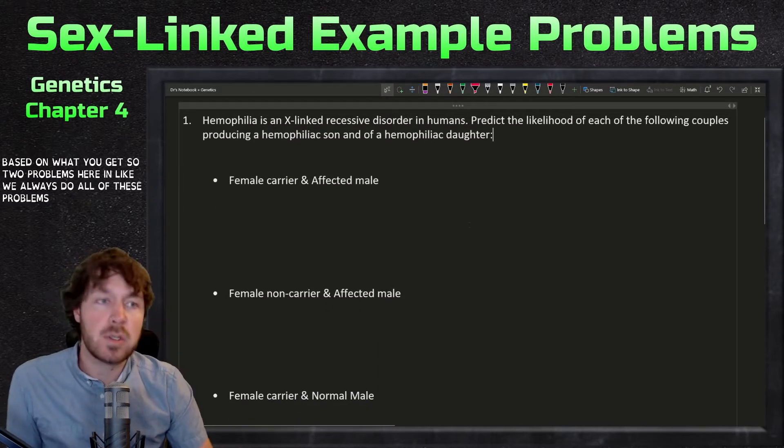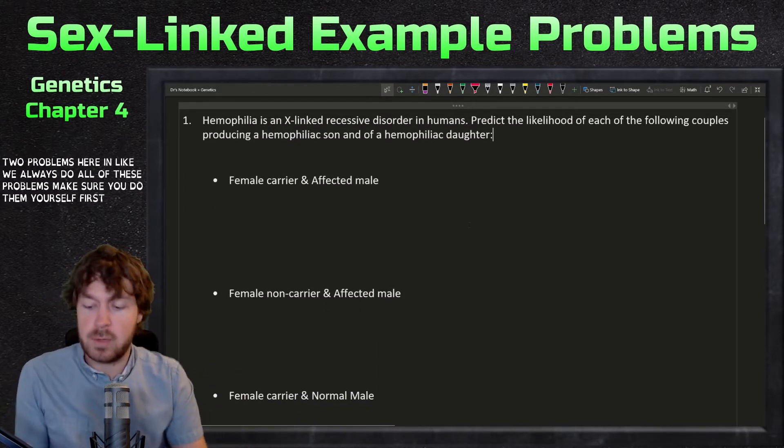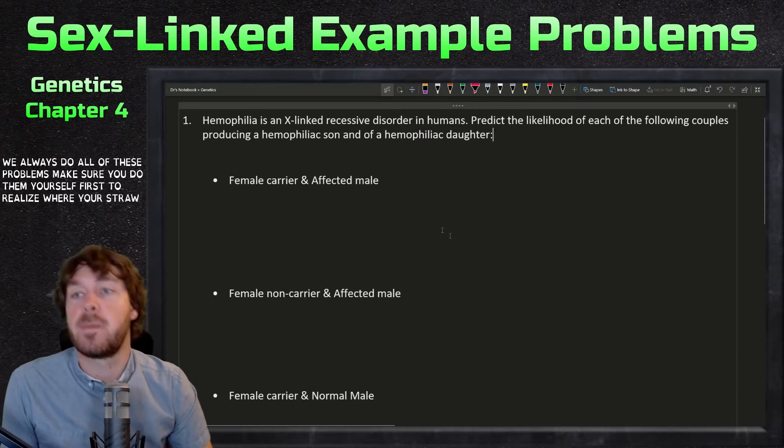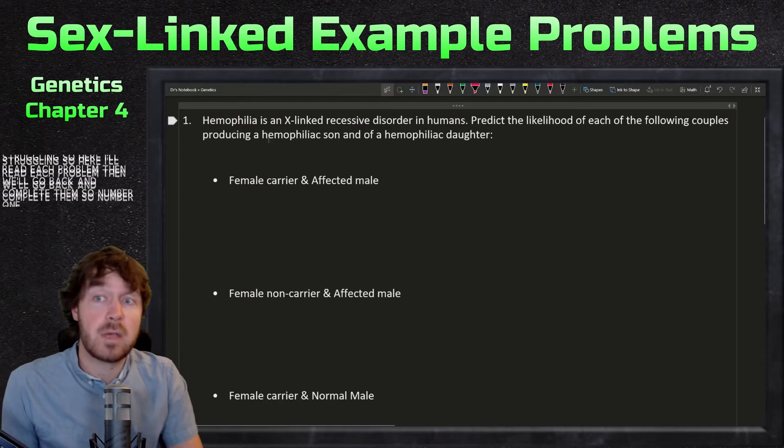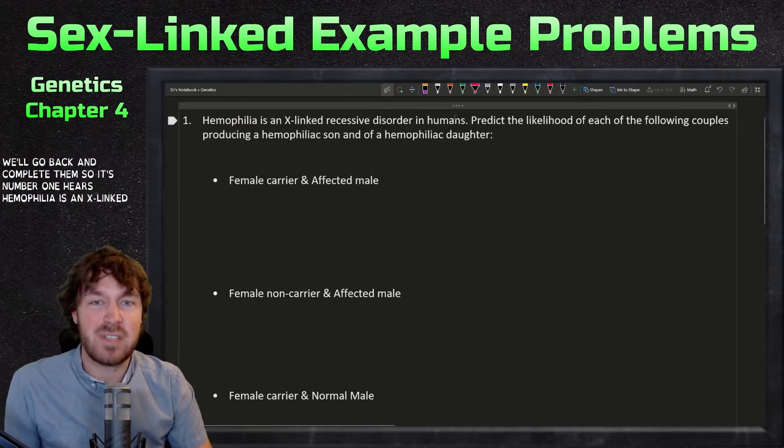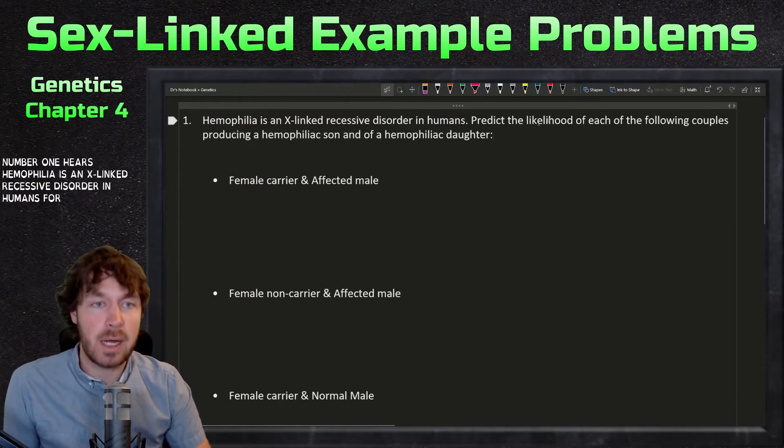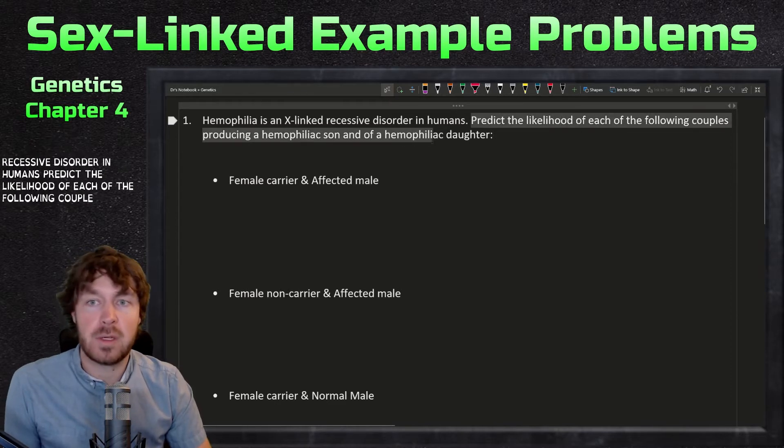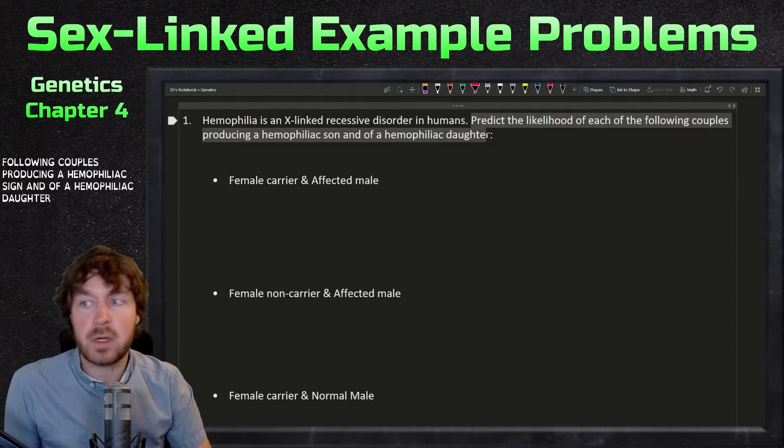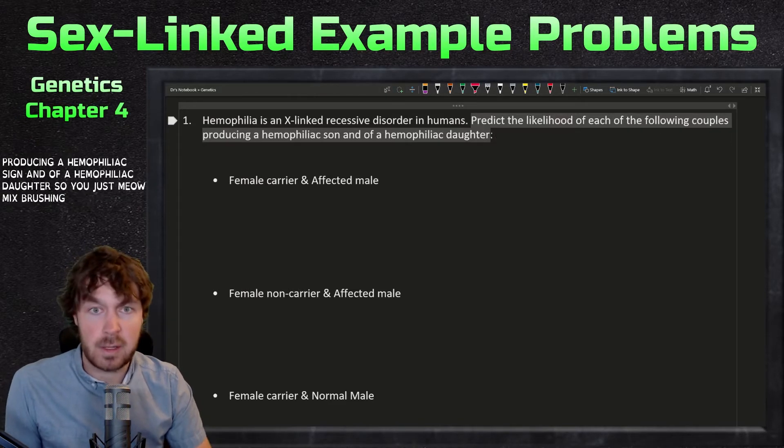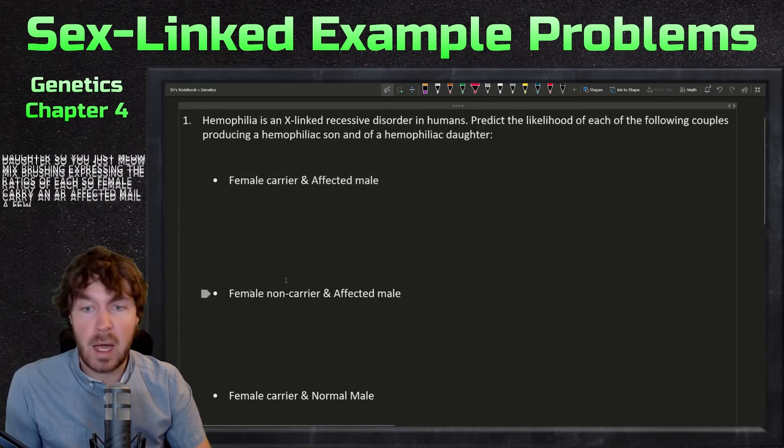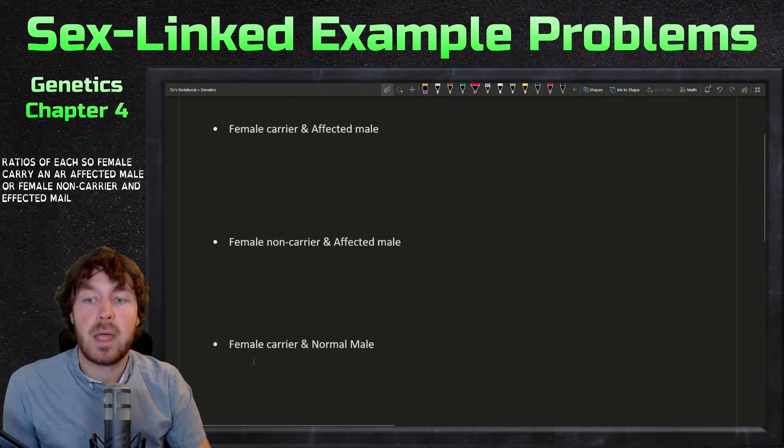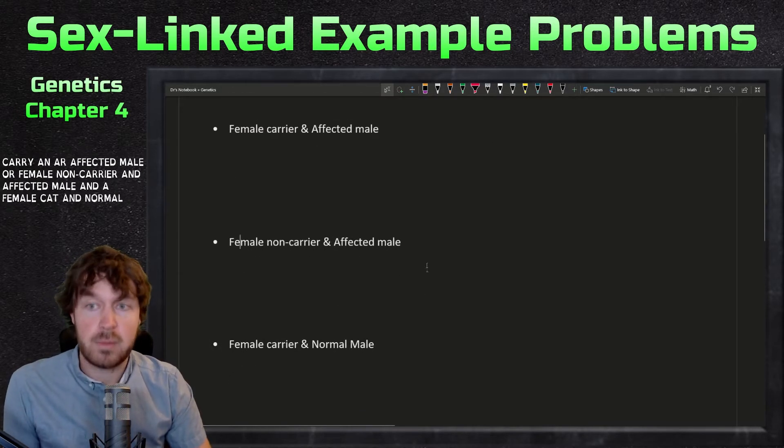Like we always do with all these problems, make sure you do them yourself first to realize where you're struggling. I'll read each problem and then we'll go back and complete them. Number one: hemophilia is an X-linked recessive disorder in humans. Predict the likelihood of each of the following couples producing a hemophiliac son and of a hemophiliac daughter. A female carrier and an affected male, a female non-carrier and affected male, and then a female carrier and normal male.